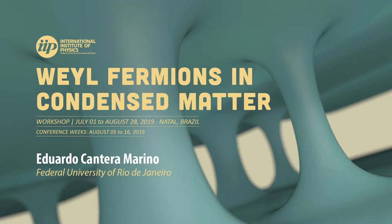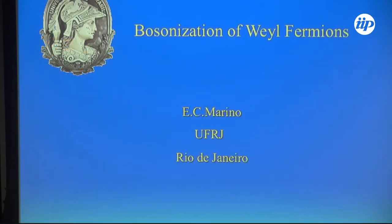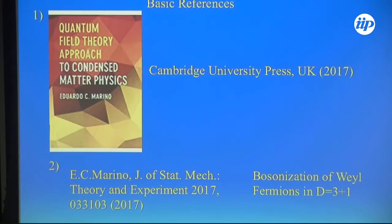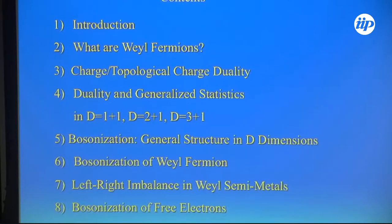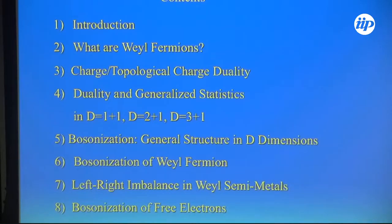I'm going to talk about bosonization of Weyl fermions. The outline covers: introduction, what are Weyl fermions, charge and topological charge duality. Out of this duality I show how to get generalized statistics in 1, 2, and 3 spatial dimensions. Then the general structure of bosonization in arbitrary dimensions, the specific bosonization of Weyl fermions, some applications, and at the end a possible bosonization of electrons.